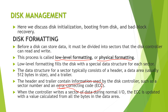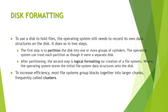There are two steps involved in disk formatting. The first step is partitioning. We partition the disk such that the data part is on one side and the data structure part is on the other side, forming cylinders. The operating system can then treat each partition as though it were a separate disk.